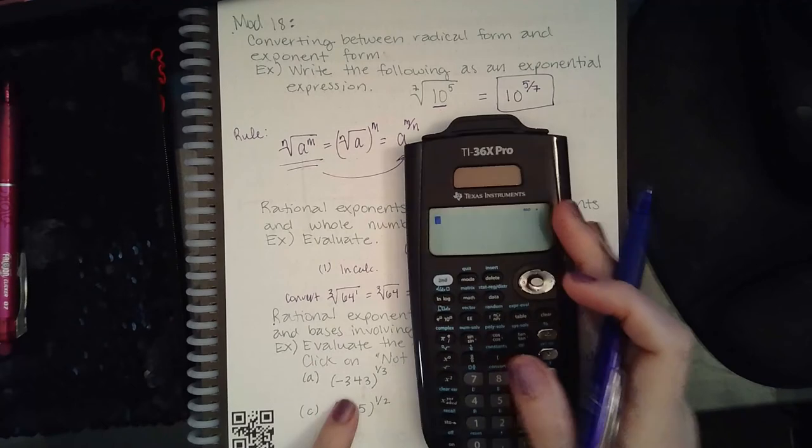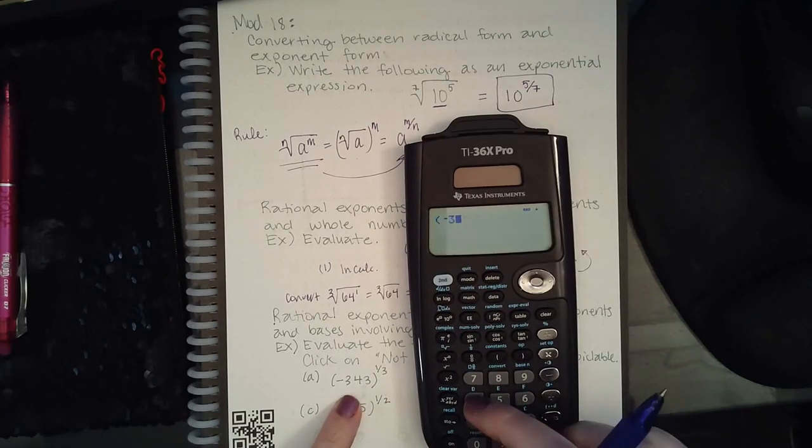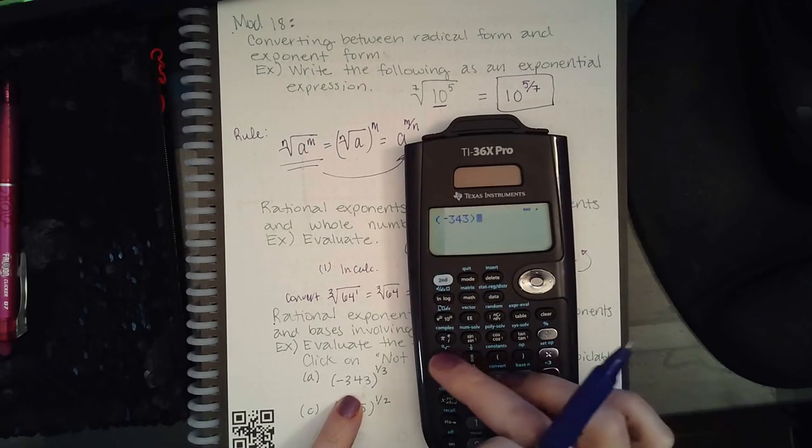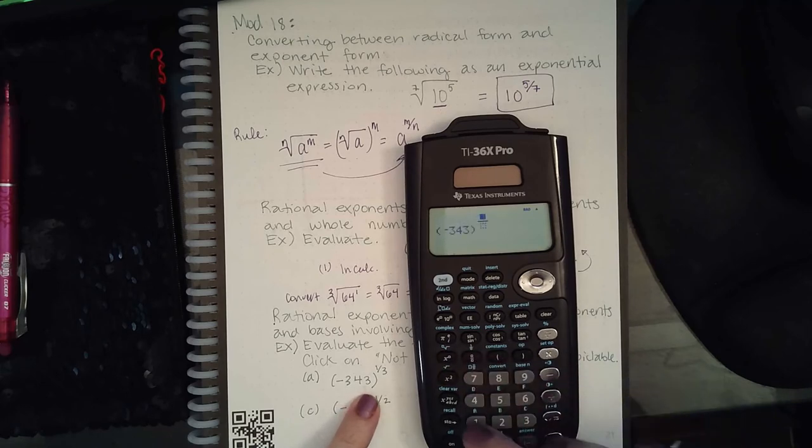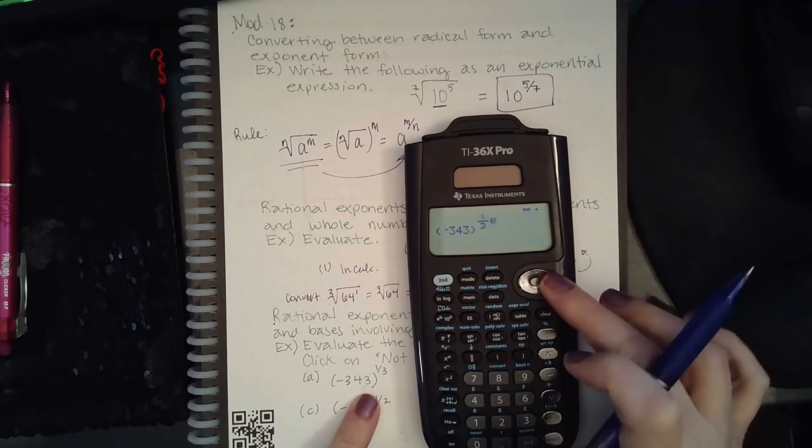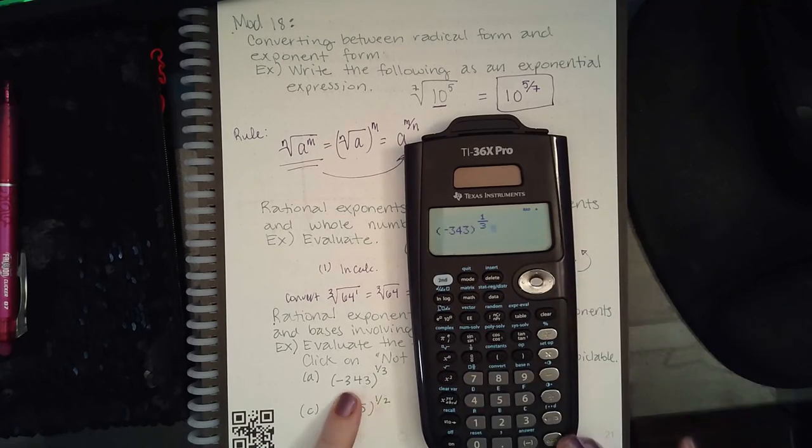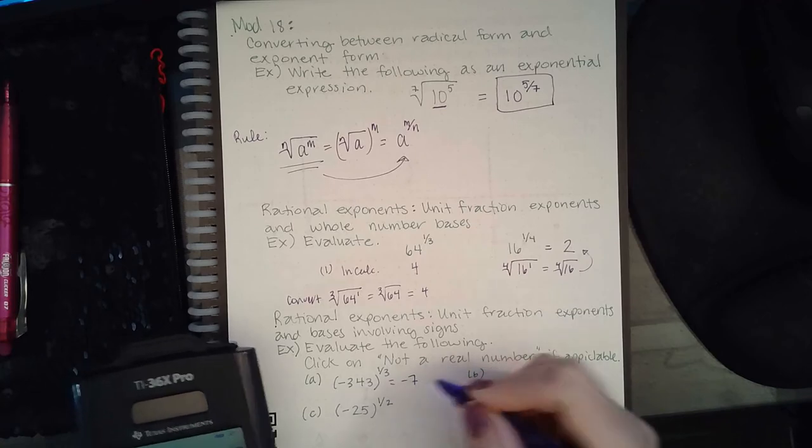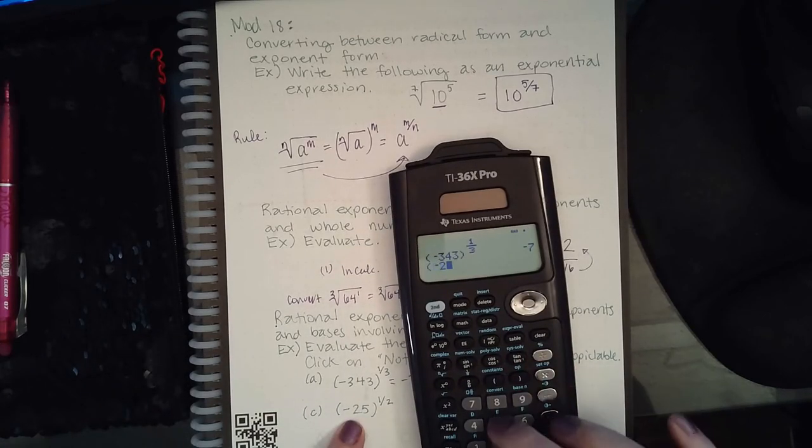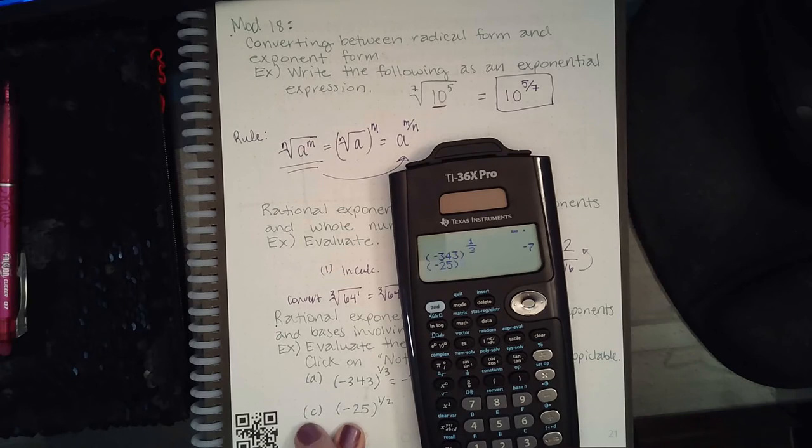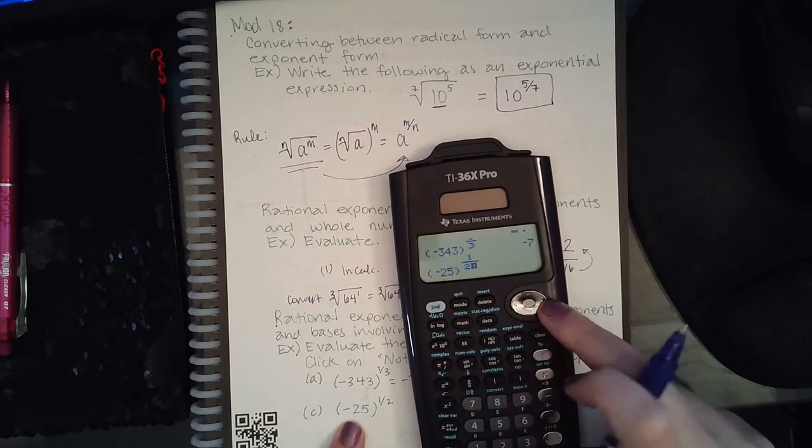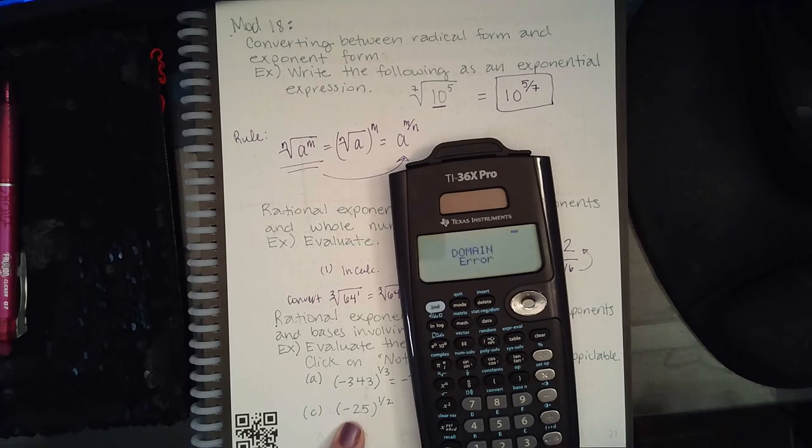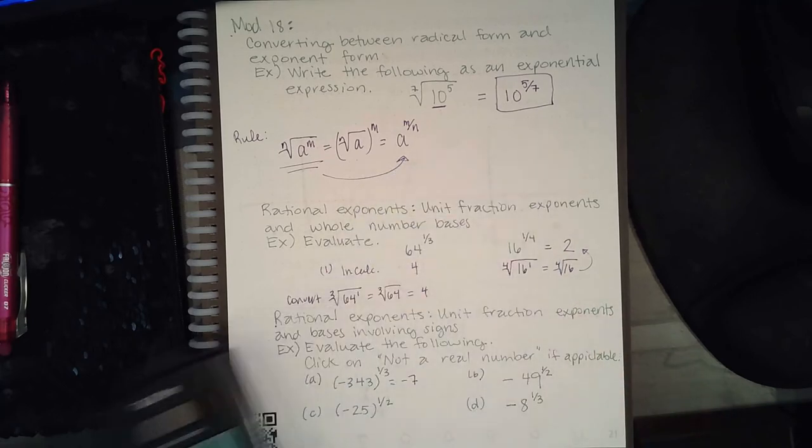If there are parentheses in the problem, I need to include parentheses in my calculator. Notice this looks exactly like what's on my paper. When I hit enter, I get negative 7. Same thing here—negative 25. For this one-half problem, it says domain error. That's when I would click 'not a real number.'